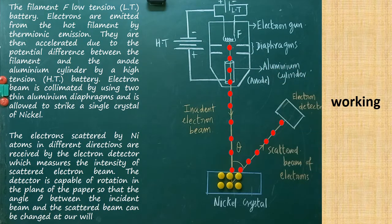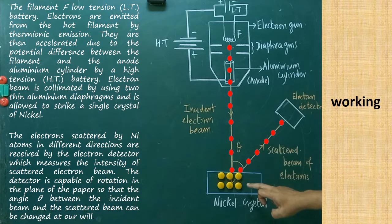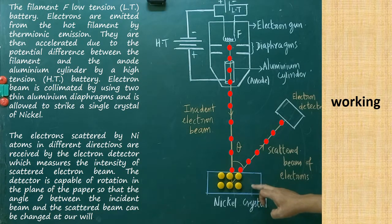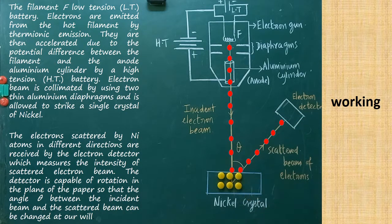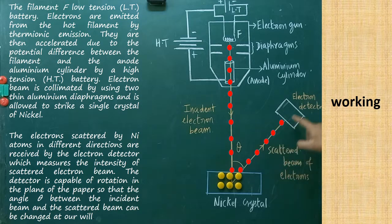Finally, these electron beams are allowed to strike on the single crystal of nickel. A single crystal of nickel is taken, on which the electron beam is made incident. The electrons are then scattered by the nickel atoms in different directions and received by the electron detector.